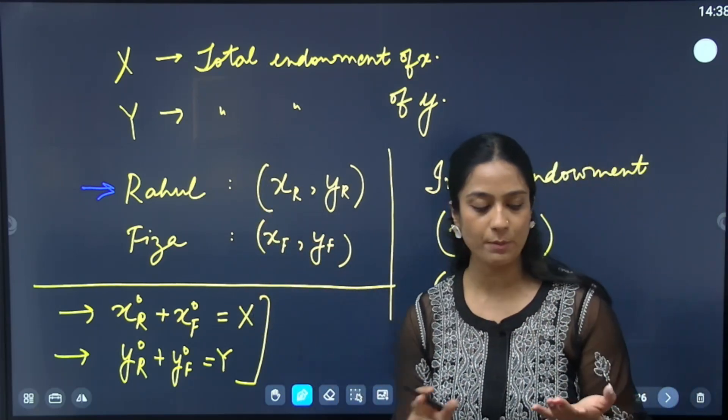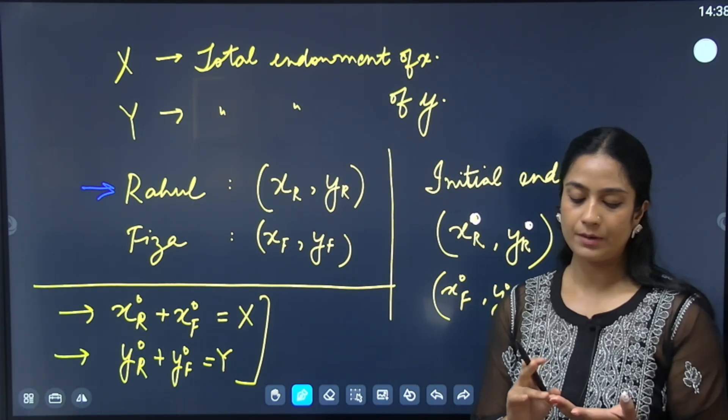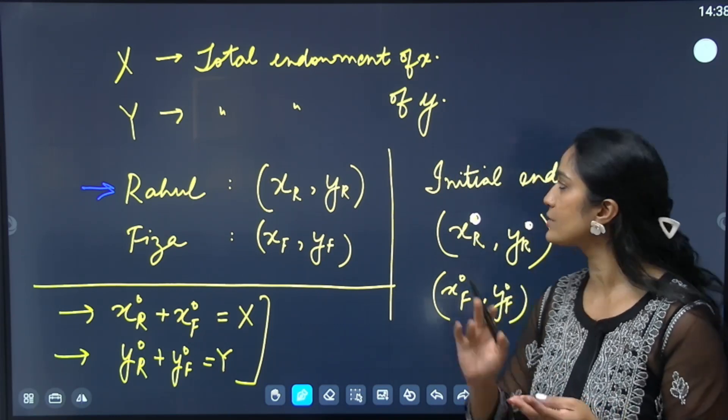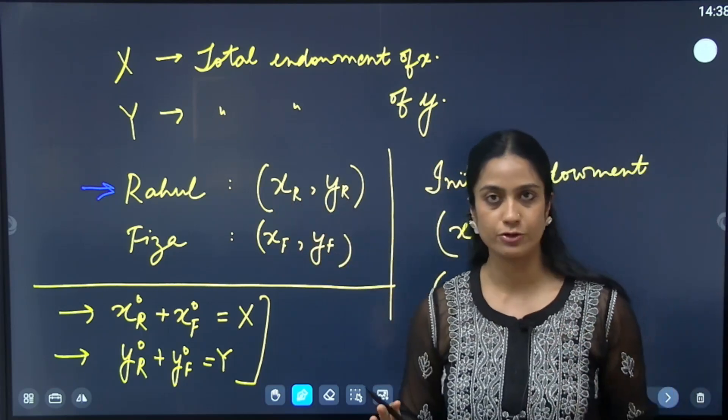Alright? So, this is the basic structure of the economy. Two consumers, two products, initial endowments, no money, only exchange. Okay?